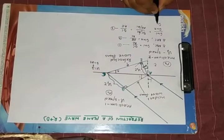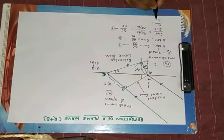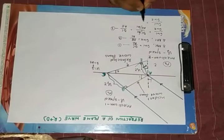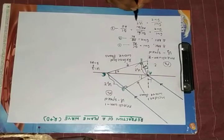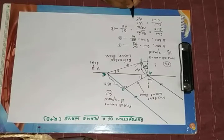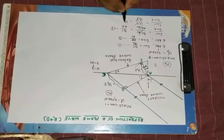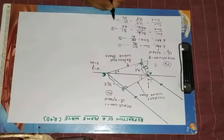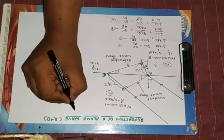I will get sin i by sin r equal to v1 tau by v2 tau, so that is equal to v1 by v2. Again, what is the definition of absolute refractive index?